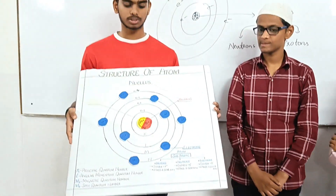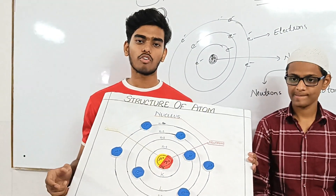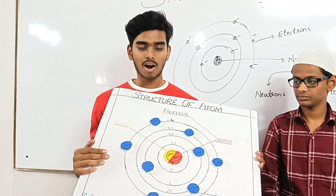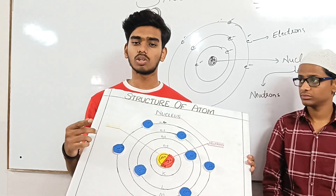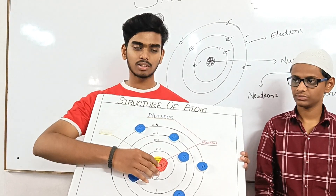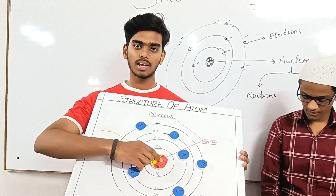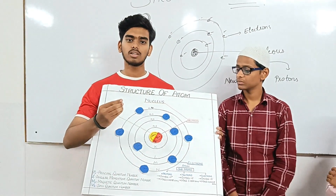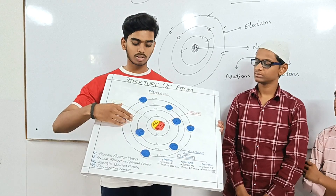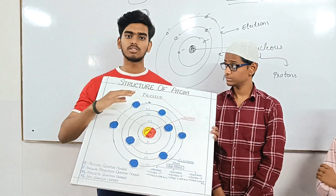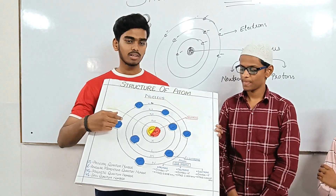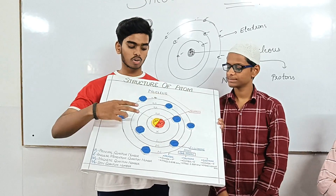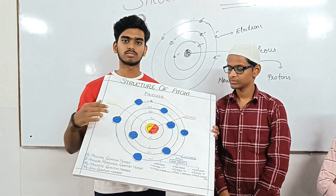The first scientist, J.J. Thomson, said that the atom is like a watermelon — the red part is positive and the seeds embedded in it are the electrons. After that, Rutherford said the center of the atom has a nucleus consisting of protons and neutrons, with electrons revolving around it. However, his model had the problem that electrons would continuously revolve and eventually collapse into the nucleus, making his model also incomplete.